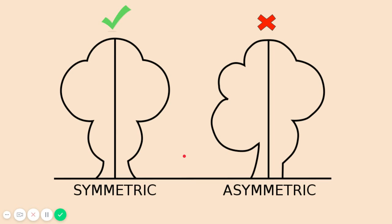Now, to help us better understand what symmetry is, let's take a look at something that doesn't have symmetry. On the left over here, we have our line of symmetry going right down the middle of this shape, and we know that this side is exactly the same as this side — we can just look and see with our eyes. But let's take a look at this one over here. Here's the line of symmetry right in the middle, and on this side we have this shape going on, and the other side is a completely different shape. So if we folded this on the line of symmetry, these two sides would not match up. So this is something called asymmetrical or asymmetric, which does not have symmetry.